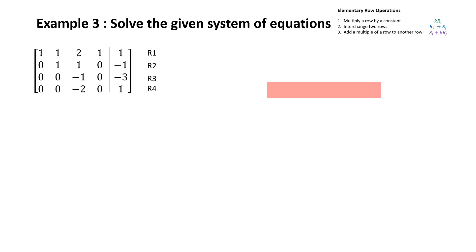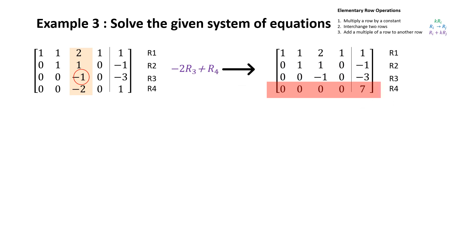Now we want to obtain a 1 in row 3 in the pivot position. We can do this by adding a multiple of a row to another row, which leads to the following matrix. However, the last row indicates that this system of linear equations yields 0 = 7. Since this cannot be a solution, the system is inconsistent and therefore there is no solution for this example.